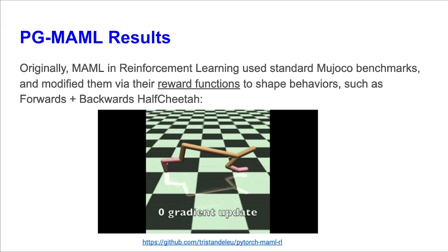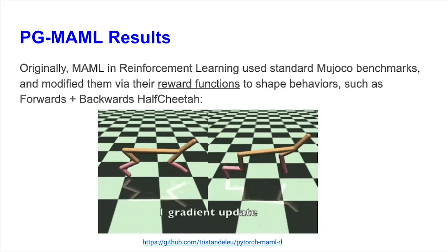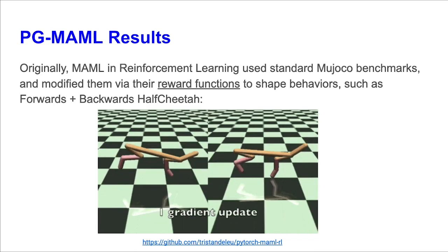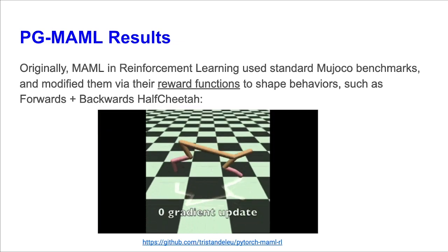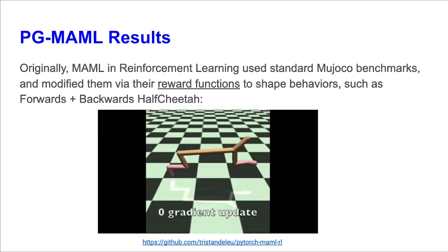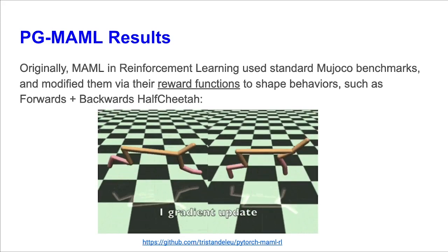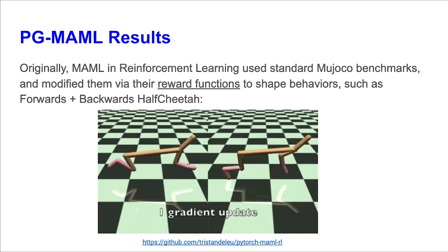Originally, MAML for reinforcement learning used standard MuJoCo benchmarks, but modified their reward functions to shape behaviors, such as producing the forwards-backwards half-cheetah, which consists of two tasks, one moving forward and one moving backwards. We see from this video, consistent with the MAML formulation, that the meta-policy runs in place, preparing to adapt, while the policy gradient updates allow to adapt to either the backwards or forwards task.